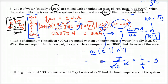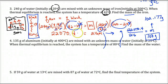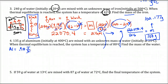What I'd like you to do now is try number four. You're going to need the specific heat of aluminum, which is 0.910 joules per gram per degree Celsius. Pause the video now and try this problem. When you come back, I'll put in the results.